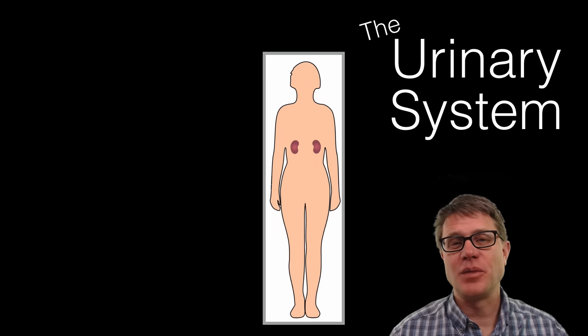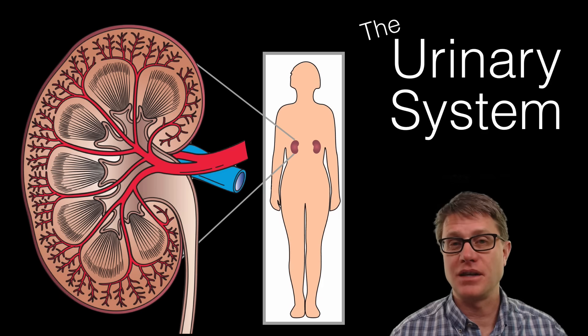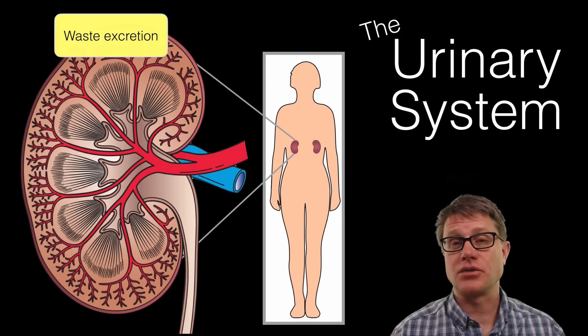Hi, it's Paul Andersen and in this video I'm going to go through the basics of the urinary system. The major organs in the urinary system are the kidneys and their major role is in waste excretion.